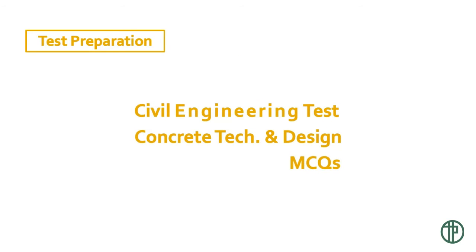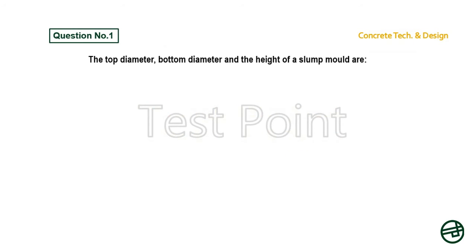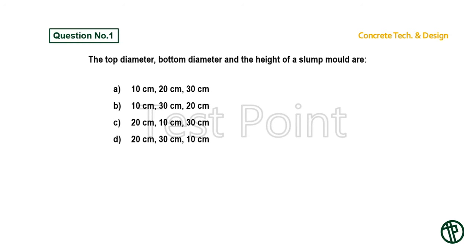Test preparation: Civil Engineering, subject Concrete Technology and Design, type Multiple Choice Questions, Part 1. Question number 1: The top diameter, bottom diameter, and height of a slump mold are — Option A: 10 cm, 20 cm, 30 cm. Option B: 10 cm, 30 cm, 20 cm. Option C: 20 cm, 10 cm, 30 cm. Option D: 20 cm, 30 cm, 10 cm. Answer is Option A: 10 cm, 20 cm, 30 cm.